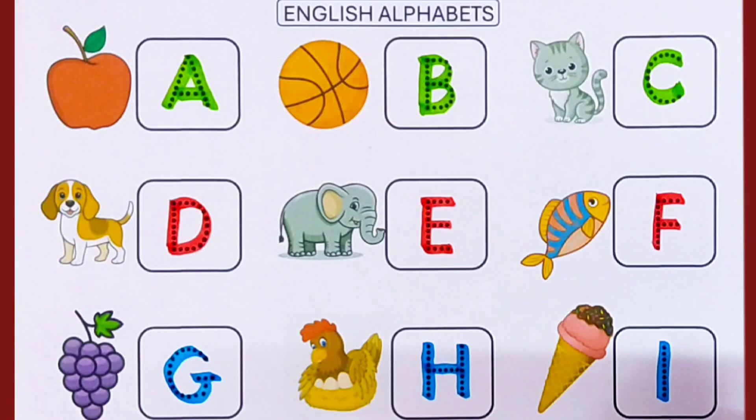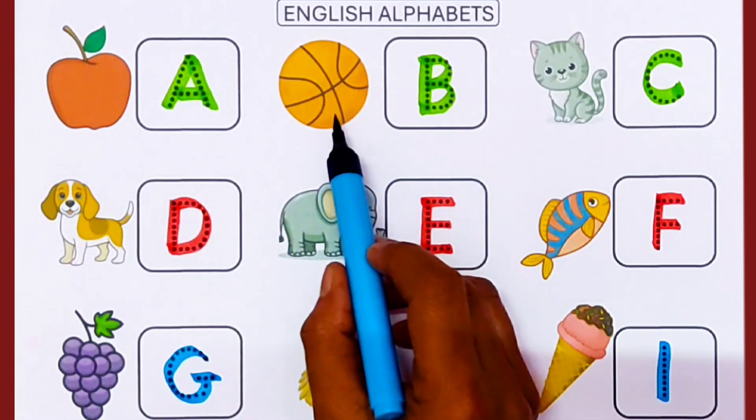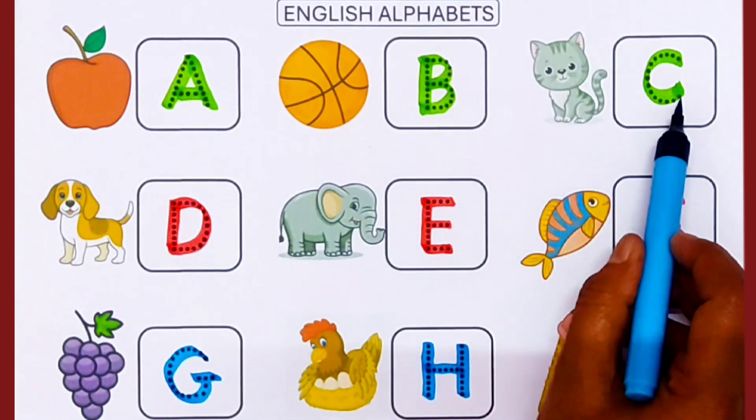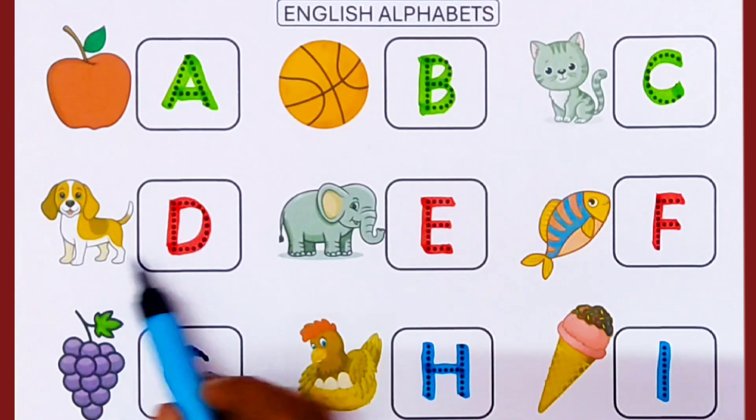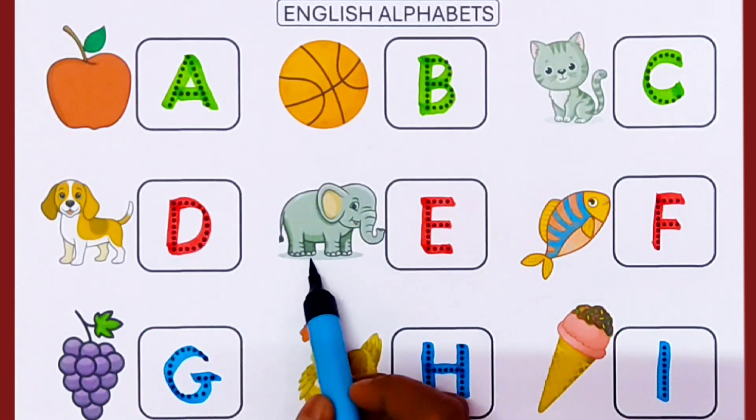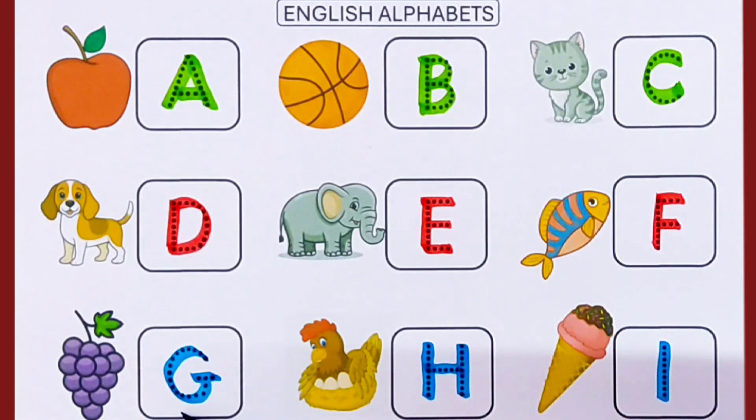I. I for Ice Cream. A for Apple, B for Ball, C for Cat, D for Dog, E for Elephant, F for Fish, G for Grapes, H for Hen, I for Ice Cream.